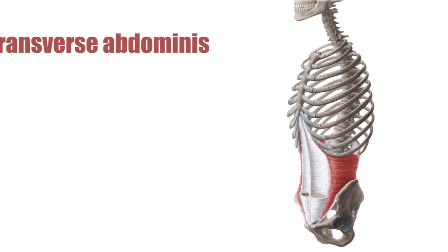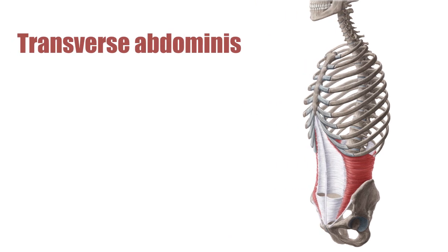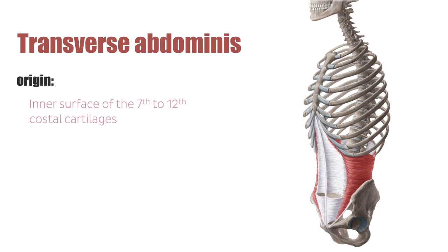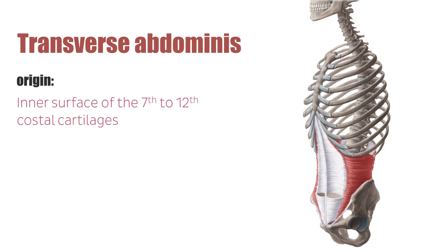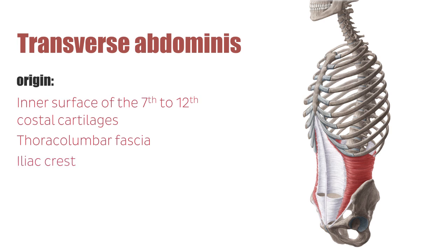The transversus abdominis muscle has four points of origin, running from the inner surface of the 7th to 12th costal cartilages, the thoracolumbar fascia, the iliac crest horizontally, and the inguinal ligament.